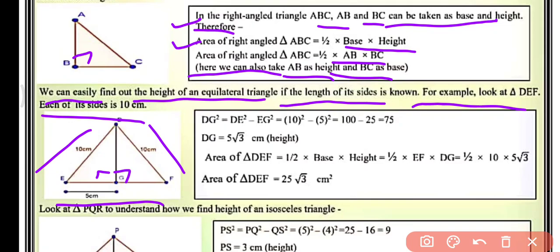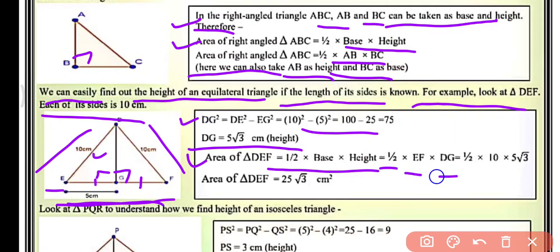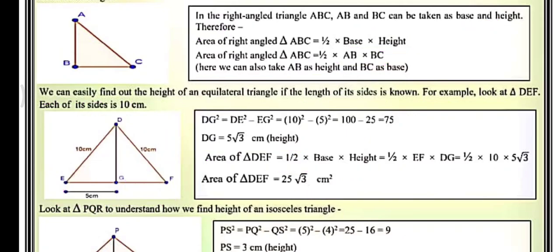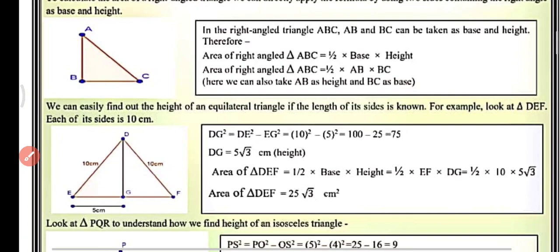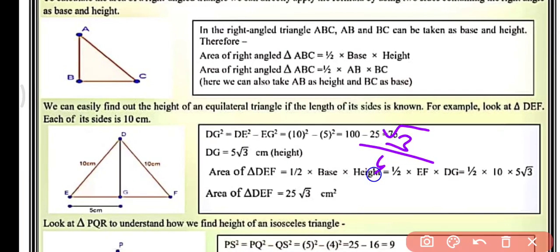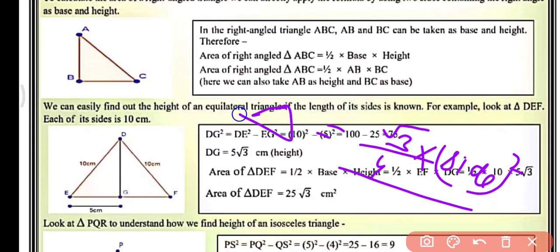Whenever we draw a perpendicular or altitude in an equilateral triangle, it bisects the opposite side. So in triangle DGE, applying this property, the height comes out to be 5√3 cm. So now the area of triangle DEF can be calculated. This is the area of equilateral triangle.